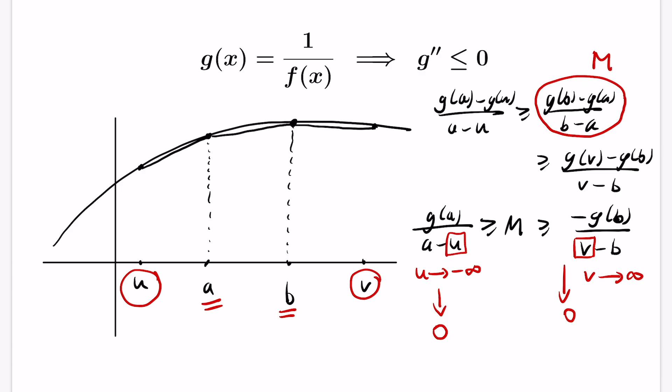So by taking u to negative infinity and v to infinity, or in other words, making u arbitrarily negative and v arbitrarily high and positive, we get that this value m actually itself has to be 0, which then tells us, because a and b are different, that g(a) and g(b) are actually the same. So this function g(x) is actually constant. And as a result, since g(x) is a reciprocal of f(x), f(x) itself is forced to be a constant function as well.